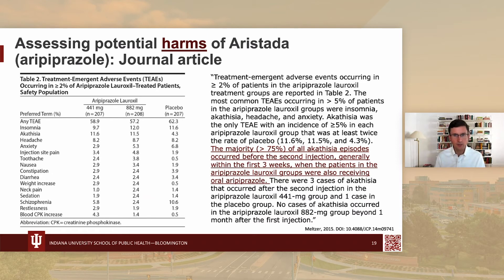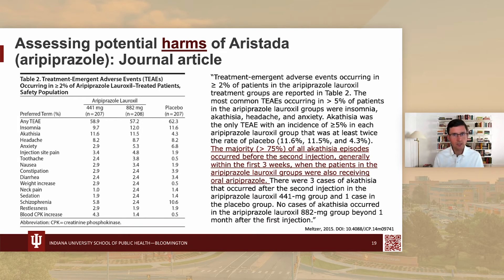When we look at trial reports, it's often unclear what's been done. Here is a table from a trial report that includes a number of different 'preferred terms.' A reviewer would have to know that 'preferred term' refers to the MedDRA system — which might not be clear from many trial reports. The table uses selection criteria similar to the FDA snapshot: occurring in at least 2% of aripiprazole-treated patients. But then text includes statements like 'the majority of episodes occurred before the second injection, generally within the first three weeks' — and we don't know whether that was a planned analysis or a post-hoc exploration.